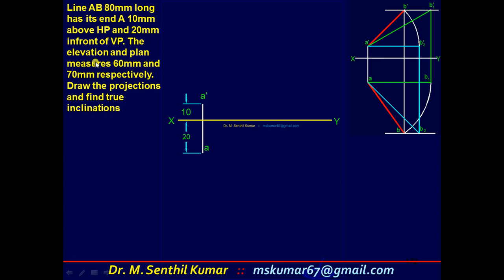One end A' is 10, A is 20. The elevation (front view) and plan (top view) are 60 and 70 respectively. That means A'B' is 60, A'B2' is also 60. AB top view is 70, AB1 is also 70.